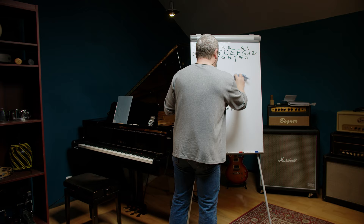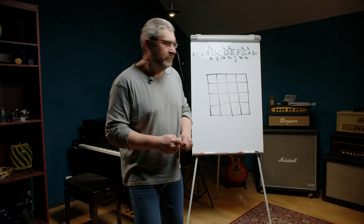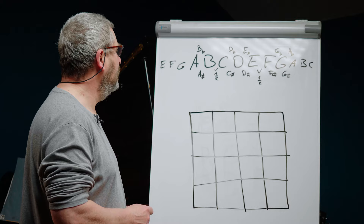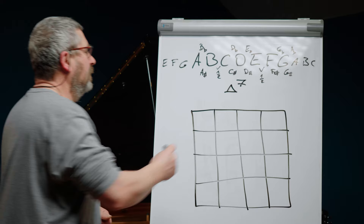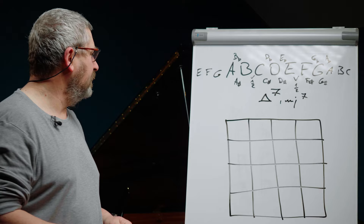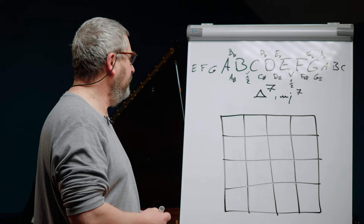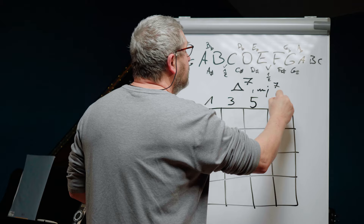Let's make one more, a little bit more difficult — one with four voices. We'll make a major seventh chord. We have a major chord with a major seventh — Wielka septyma in Polish. We need the root, the fifth, and the major seventh.